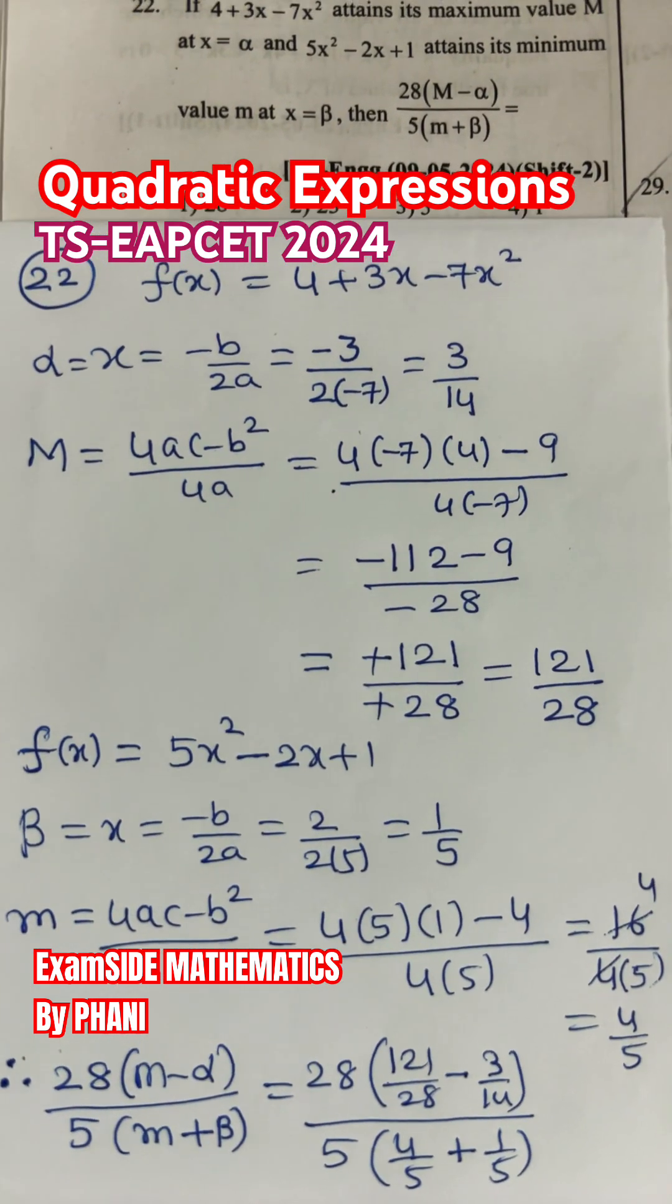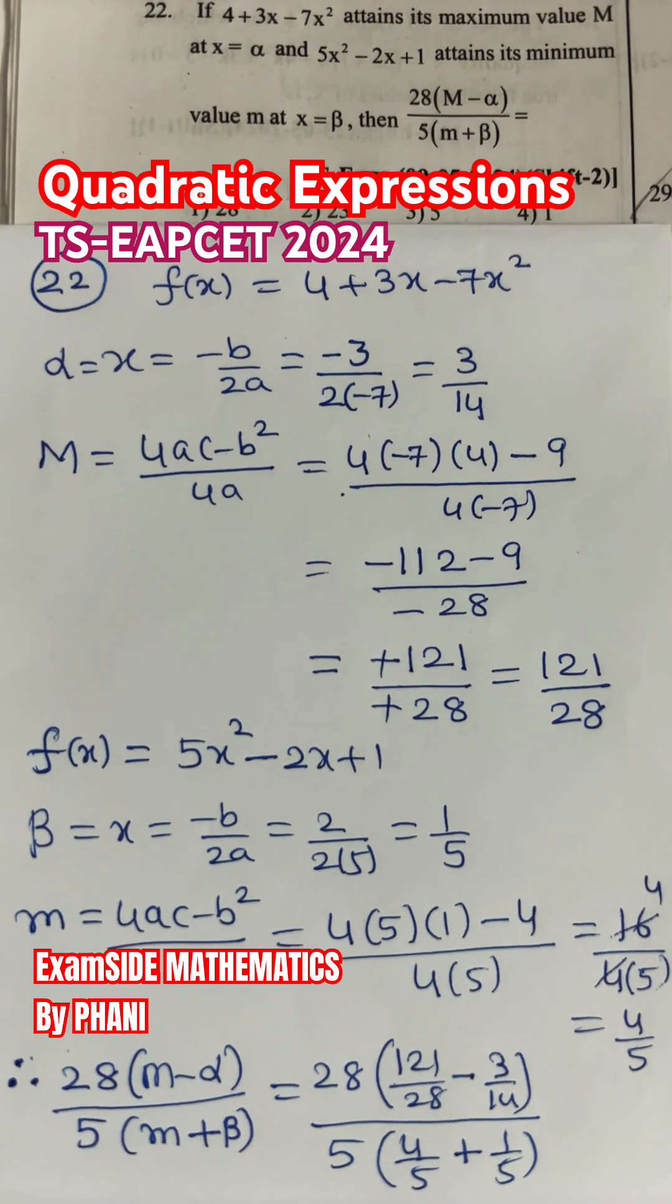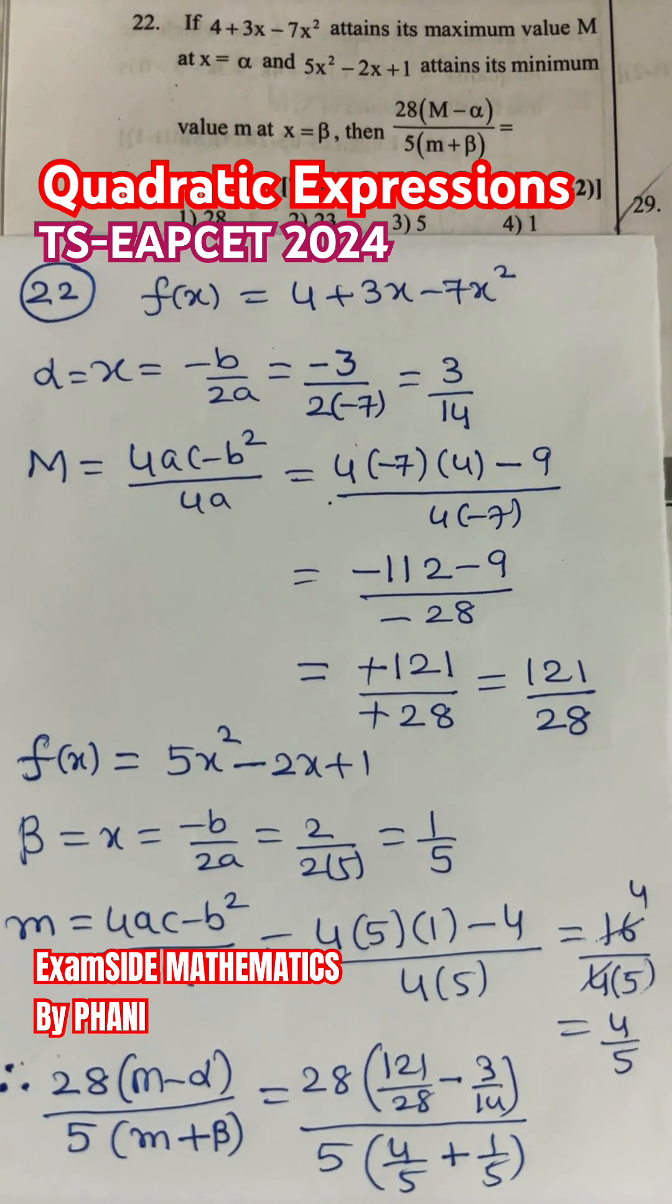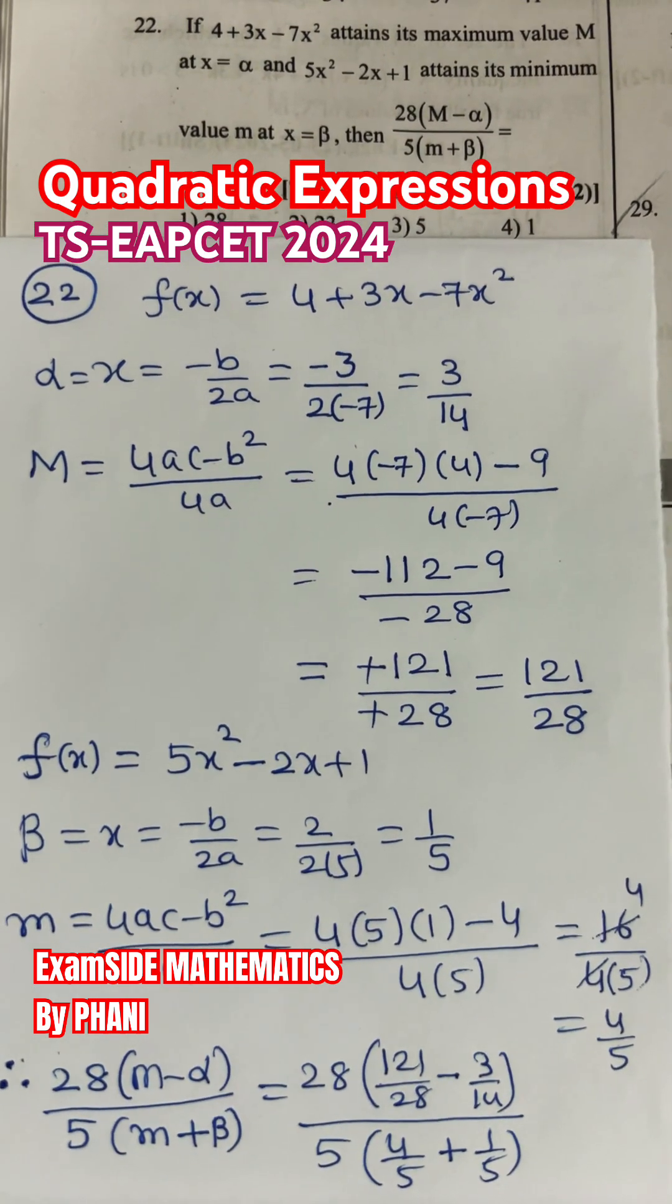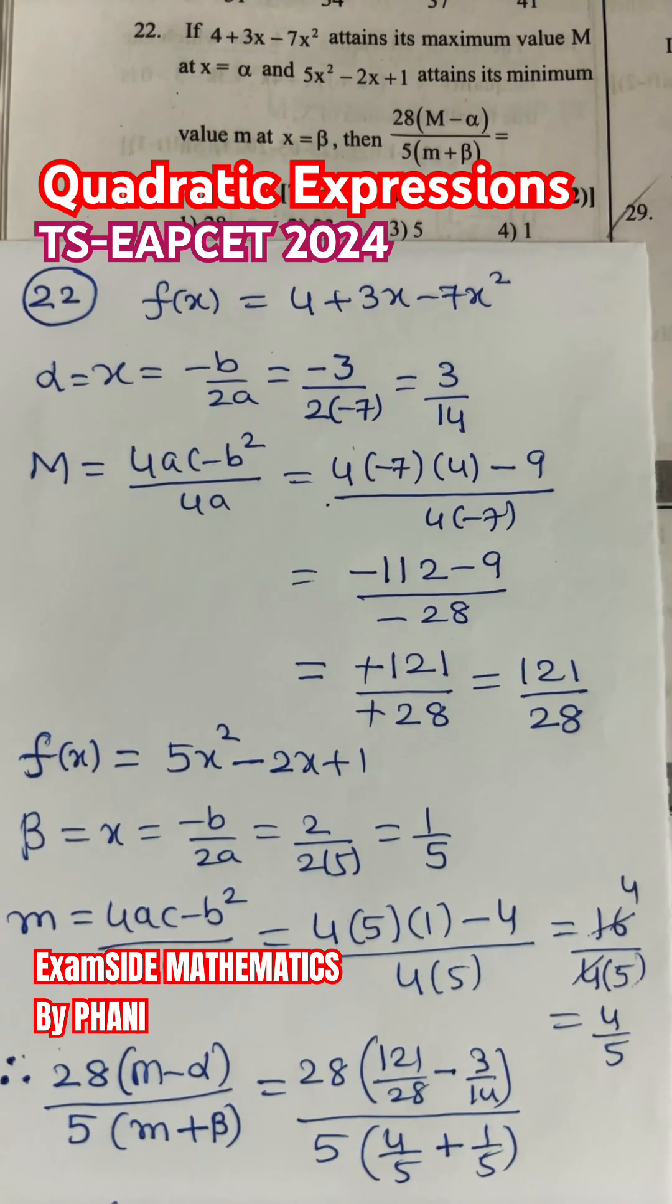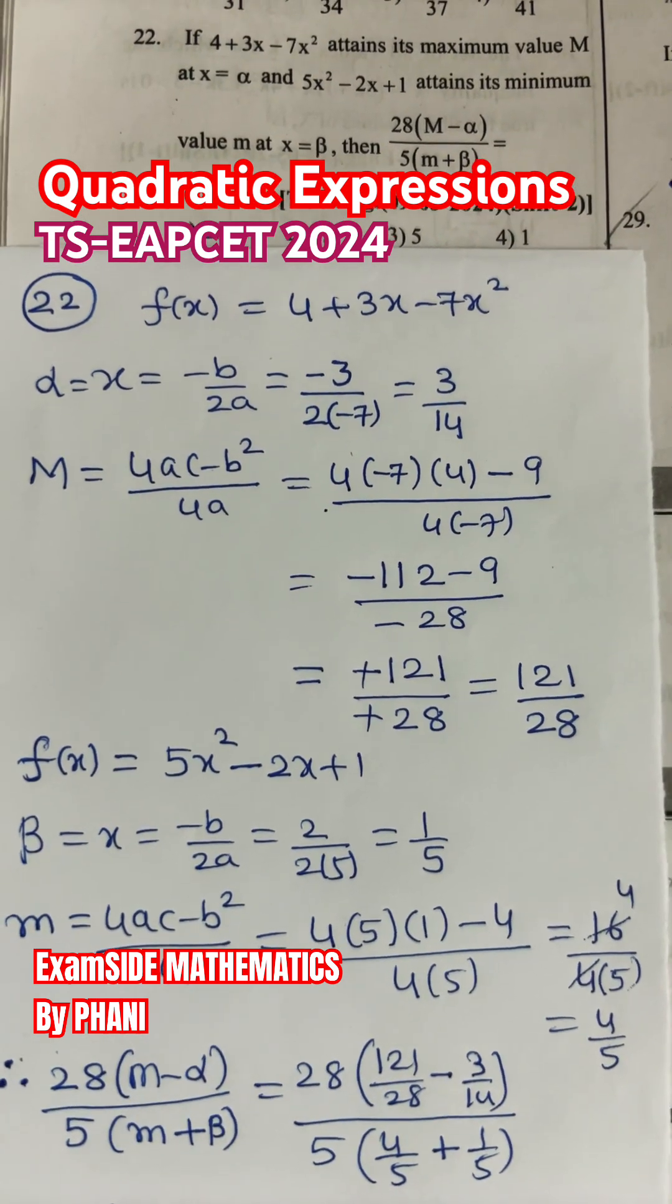So, first quadratic expression f(x) = 4 + 3x - 7x². At x = -b/2a, x² coefficient is -7, a is less than 0, then it has a maximum value.